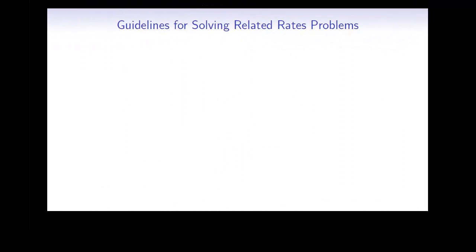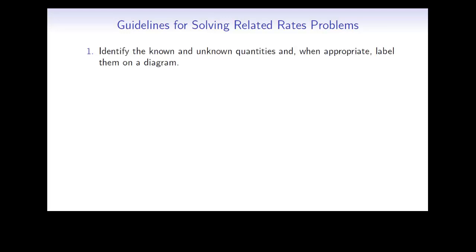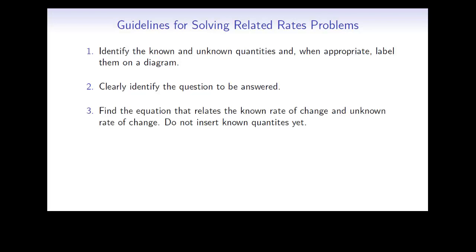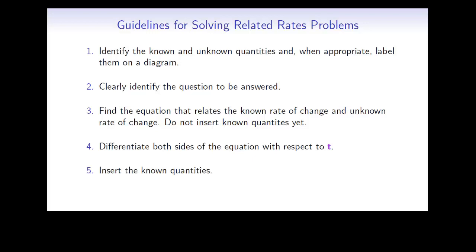We'll now discuss some guidelines for solving related rates problems. Keep in mind, these are only guidelines, and there can be more than one way to solve a given problem. First, identify the known and unknown quantities and, when appropriate, label them on a diagram. Next, clearly identify the question that's to be answered. Then, find the equation that relates the known and unknown rates of change. Do not sub in any known quantities yet. Then, differentiate both sides of the equation with respect to t. Insert the known quantities. And finally, solve for the unknown rate of change.